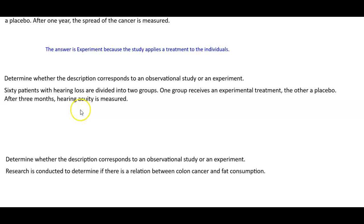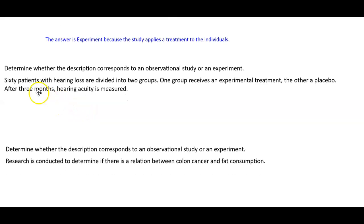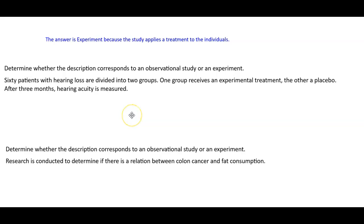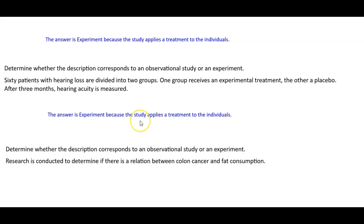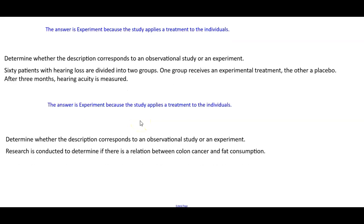Next one. Sixty patients with hearing loss are divided into subgroups. One group receives an experimental treatment, the other a placebo. After three months, hearing acuity is measured. The answer is experiment because a study applies a treatment to individuals.